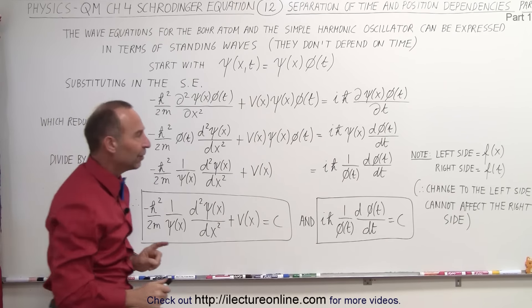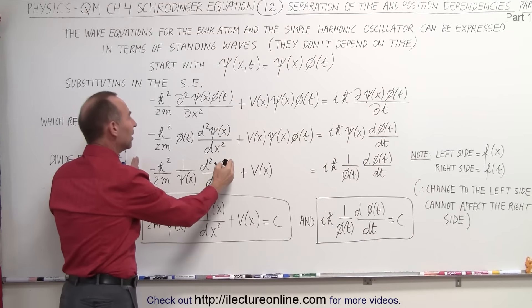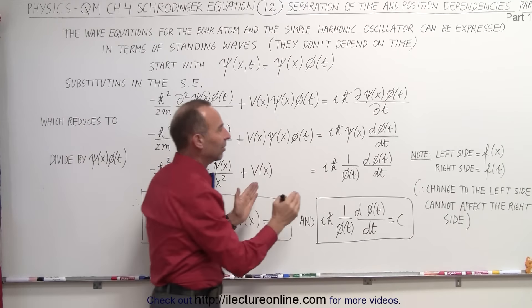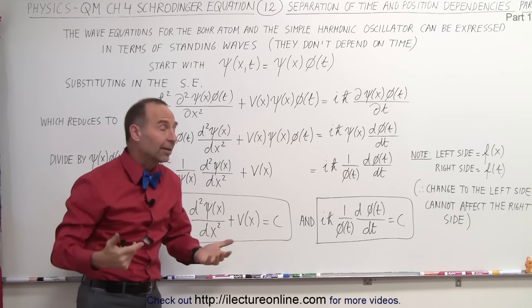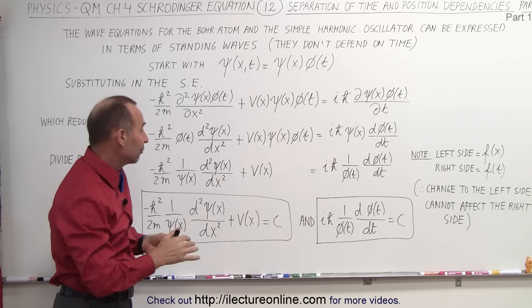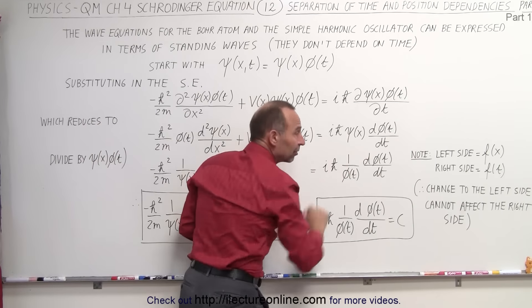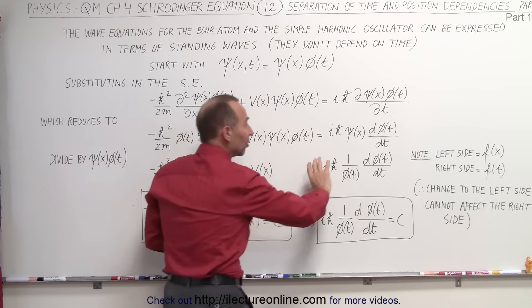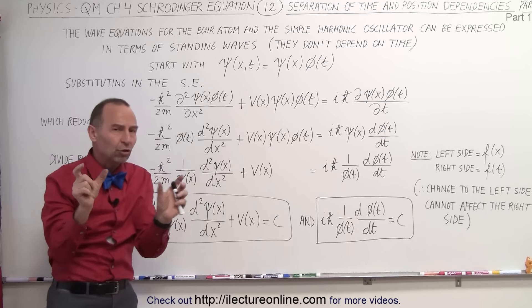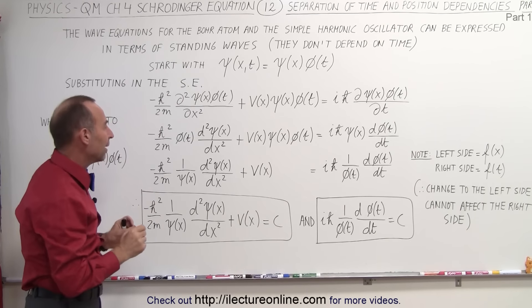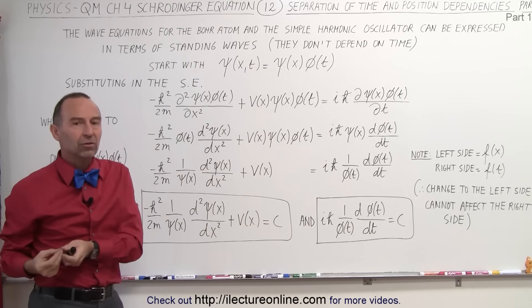Now, if you look very carefully, note on the left side we only have dependency on position. On the right side, we only have dependency on time. Since that's now the case, we realize that if we make a change on the left side in position, that will not affect the right side at all. If we make a change in the time on the right side, that will not affect the left side at all. And since those equations are equal to each other, that means that each side of the equation must be equal to the same constant.